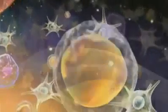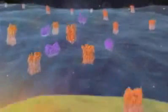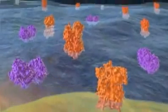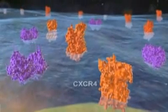SDF1 interacts with the chemokine receptor, called CXCR4, which is located on the surface of stem cells, bone marrow endothelial cells, and other stromal cells.